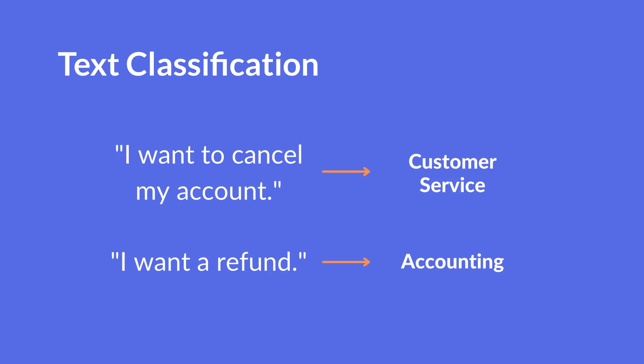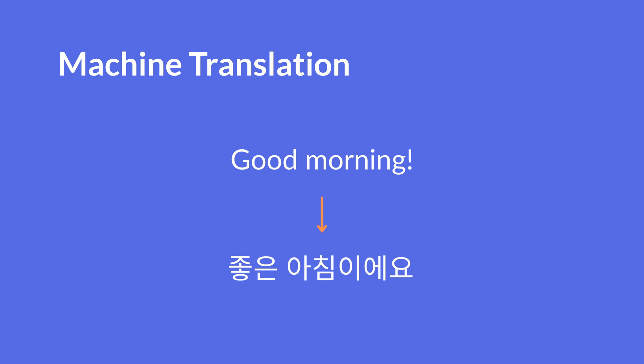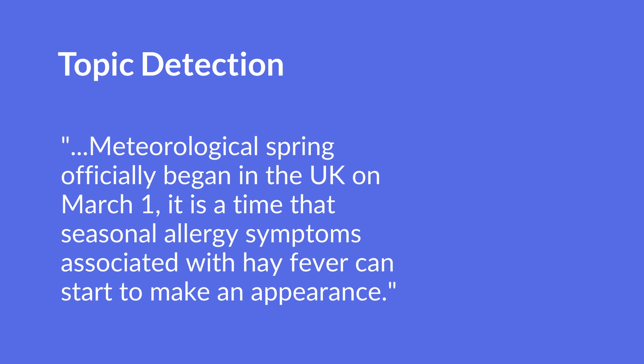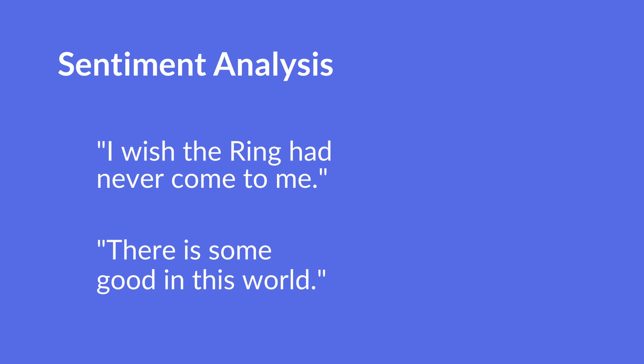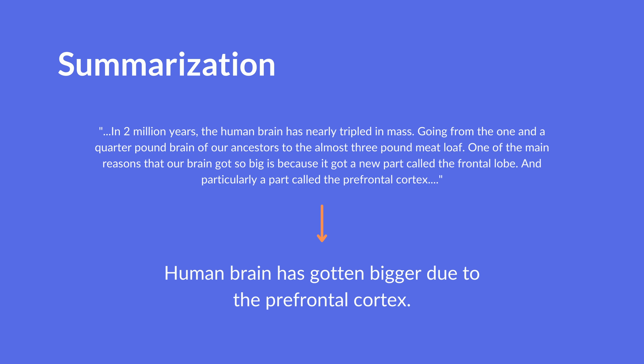Some of these are text classification — a higher level task that gets a piece of text and classifies it into the relevant group. Machine translation is the goal of translating a piece of text from one language to another. Content moderation is the goal of filtering out anything not appropriate for a certain group — for example, making sure there are no swear words in children's books. Topic detection is understanding what topics are being mentioned in a given text. Sentiment analysis tries to understand if a piece of text has a positive or negative sentiment. Summarization takes a longer piece of text and makes a shorter one or two sentence summary of it.